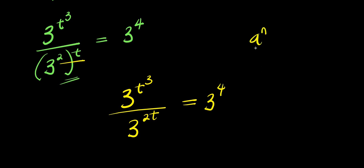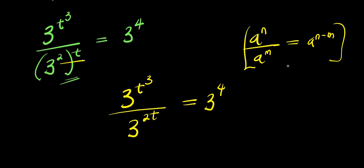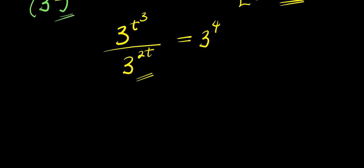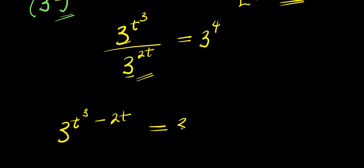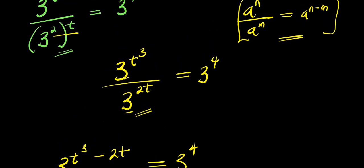Now, if you have a to the power n divided by a to the power m, that equals a to the power n minus m. So we apply this right here. What we are going to have will be 3 to the power of t cubed minus 2t, because the bases are equal so we subtract the exponents. And this equals 3 to the power of 4. We just applied this identity right here.